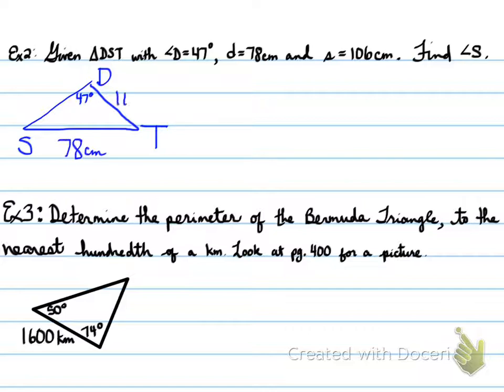DST. We have D and side d. We have angle S here. We need angle S, but we have side S. What are we going to use? We're given two sides and an angle that's opposite that. Two sides here and here, and an angle opposite one of the given sides. We need to solve for S.